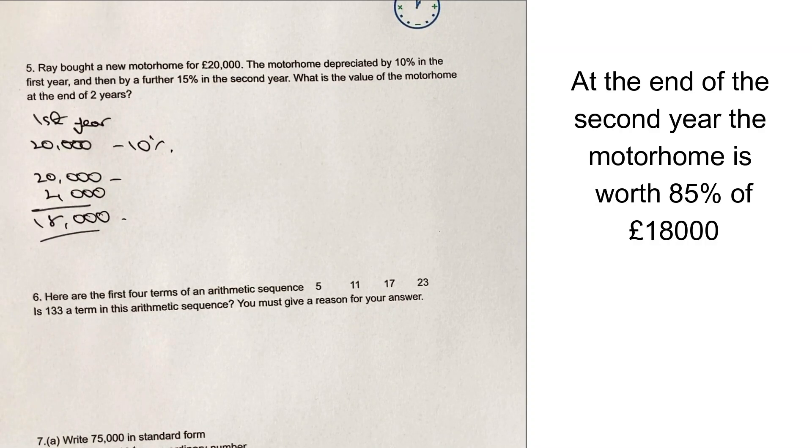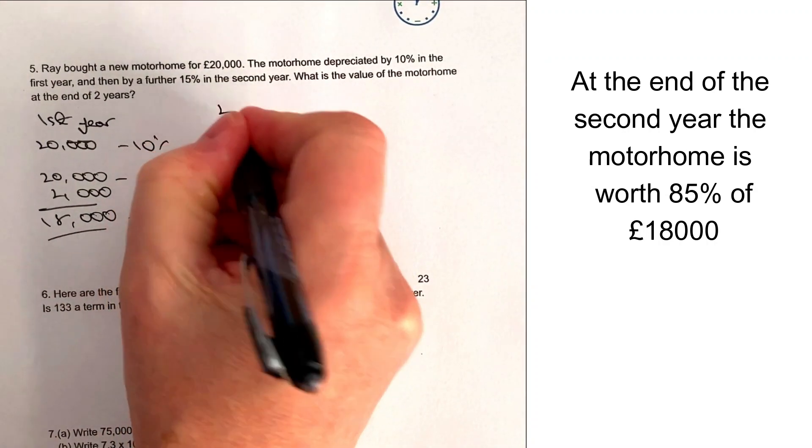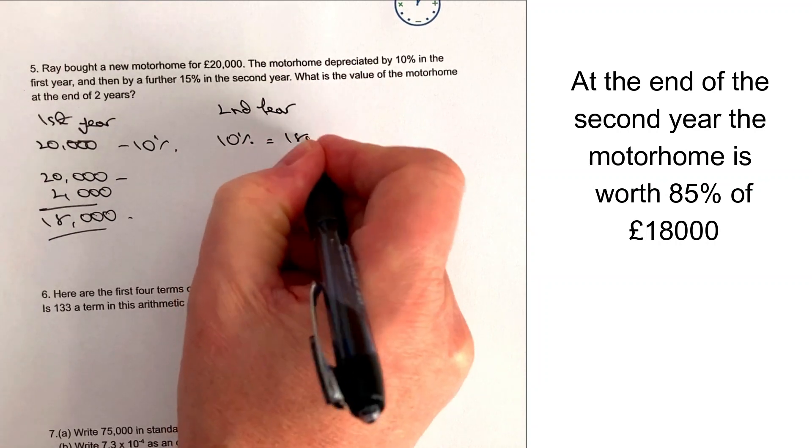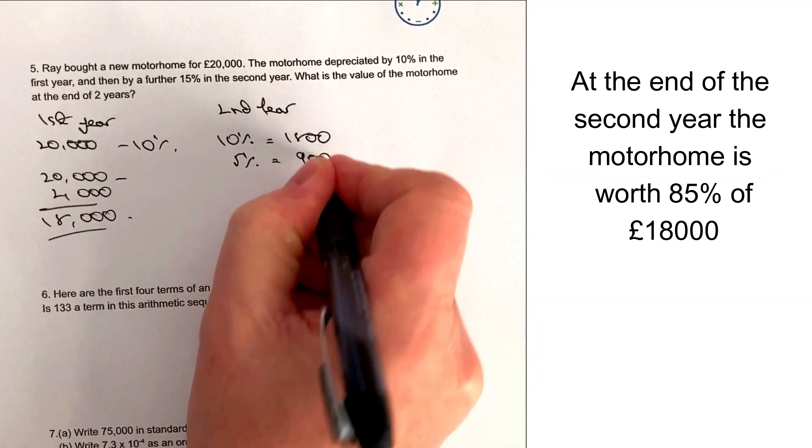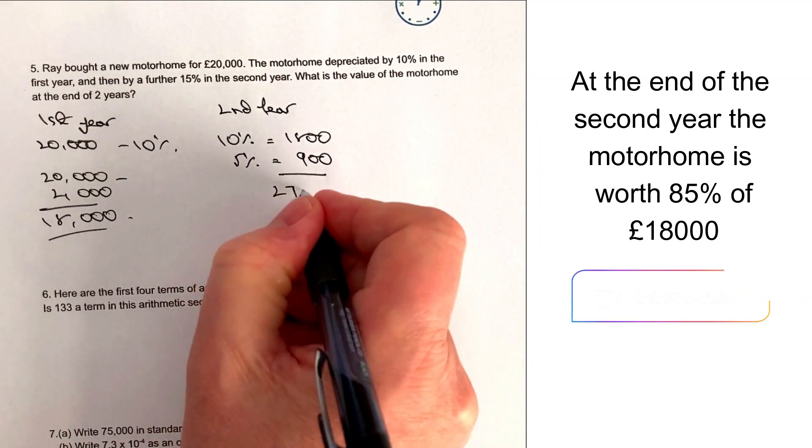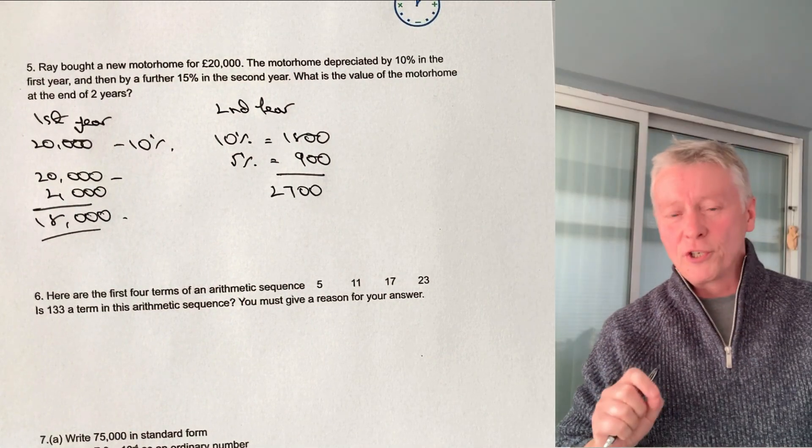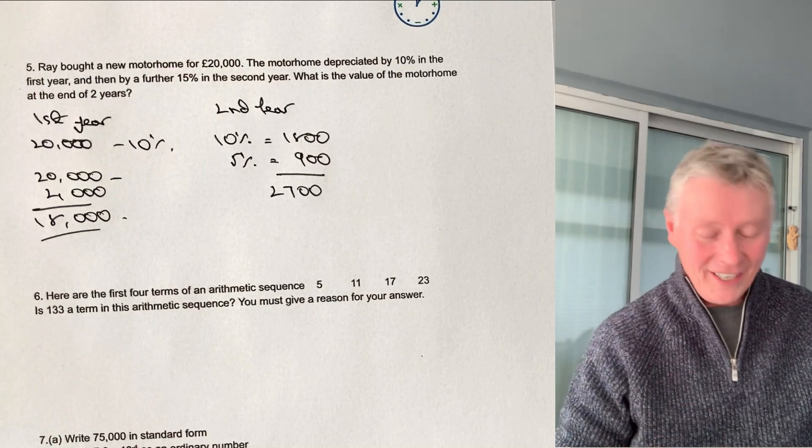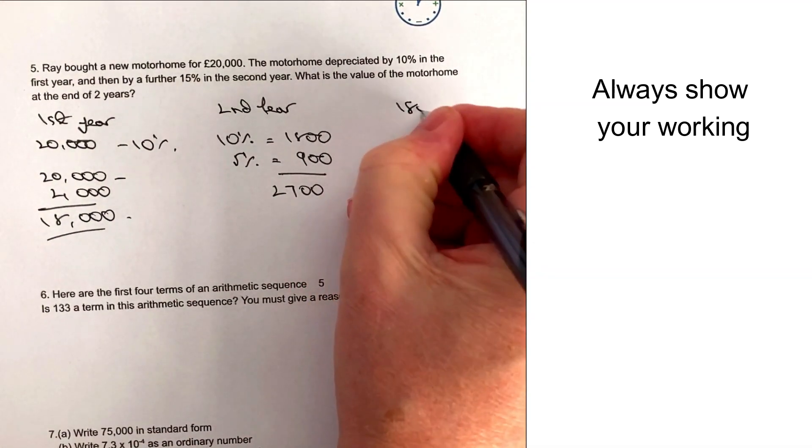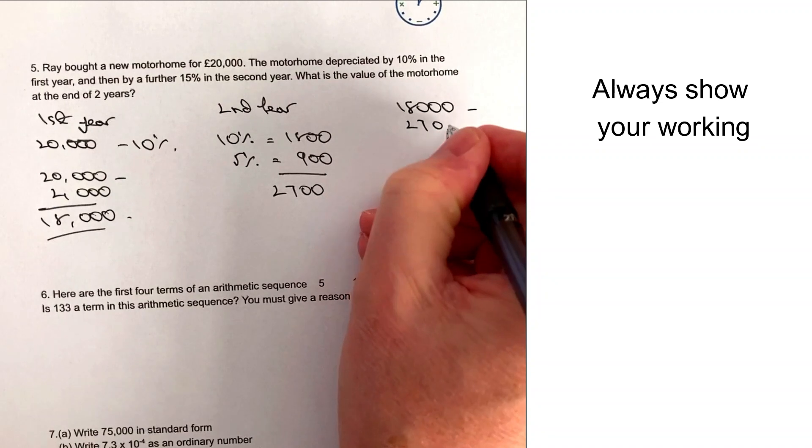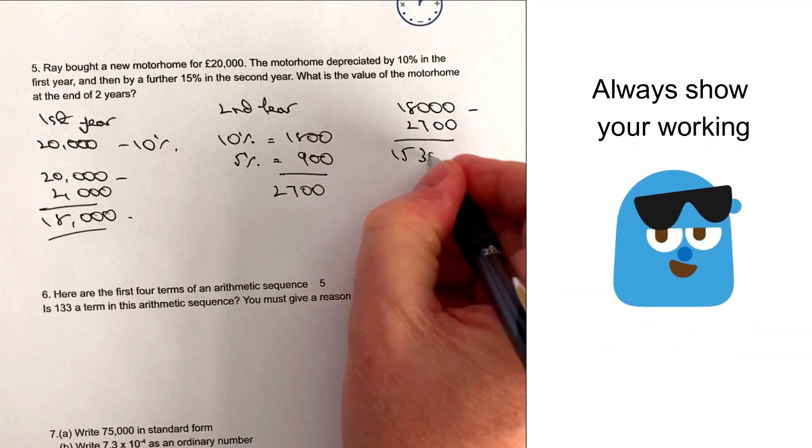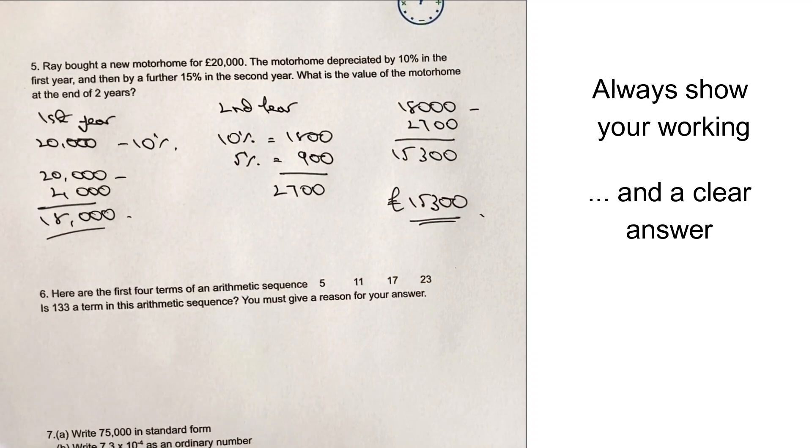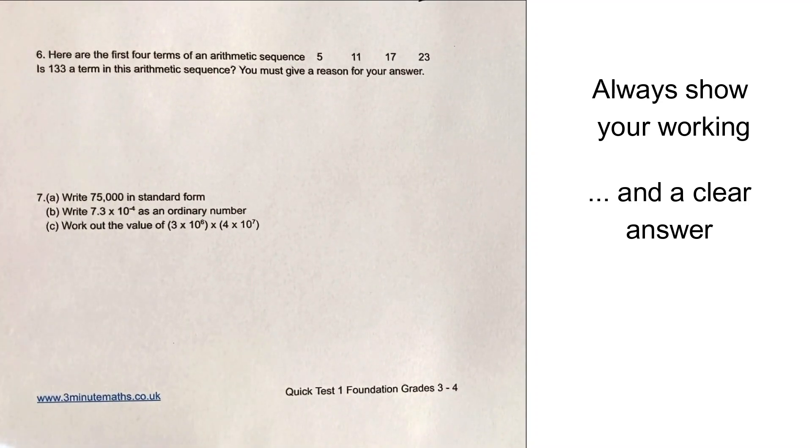And then we need to depreciate it further by 15% in the second year. So we've got to work out 15% of £18,000. And that's fairly OK, because actually, what we could say is, well, we know we can work out 10%. So 10% is going to equal £1,800. We know we can work out then 5%, which is half of that, which is £900. So therefore, in the second year, it's going to depreciate by a further £2,700. Now remember, it's £2,700 from a starting point of £18,000. So we've got to take that away. So we've got that calculation of £18,000 minus £2,700, which gives us £15,300. So therefore, at the end of the two years, the motorhome is worth £15,300.